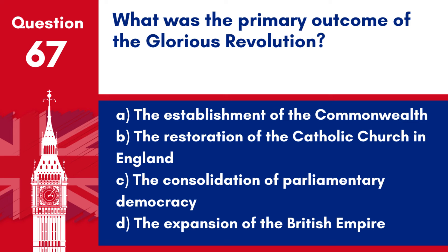Question 67. What was the primary outcome of the Glorious Revolution? a. The establishment of the Commonwealth. b. The restoration of the Catholic Church in England. c. The consolidation of Parliamentary Democracy. d. The expansion of the British Empire.